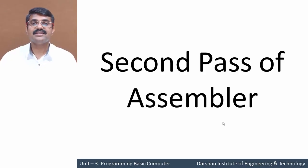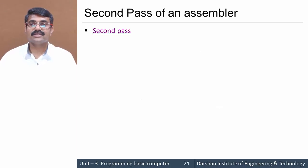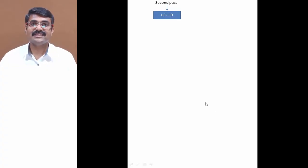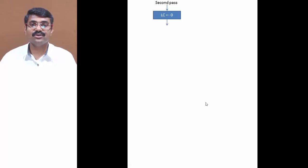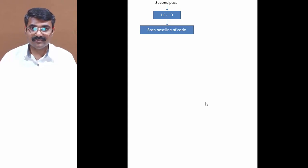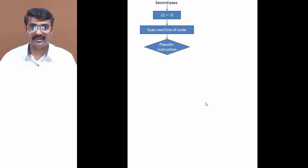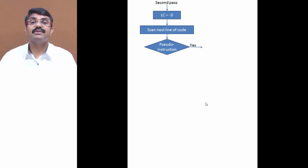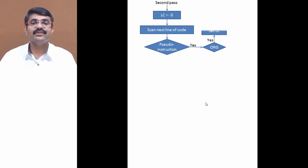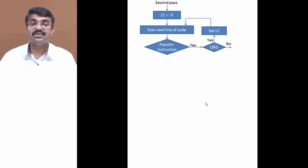Let's see how the second pass performs. Starting with the second pass, first of all, similar to the first pass, we initialize our location counter with zero. After setting it to zero, we scan the next line of code. After scanning, we check whether it is a pseudo instruction or not. If it is a pseudo instruction, we check which one — if it is ORG, then we set our location counter and move on to scanning the next line of code.